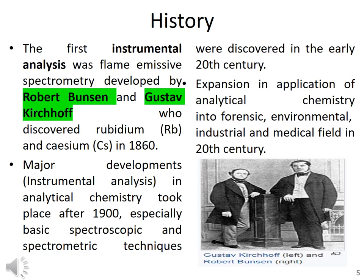Regarding the brief history of analytical chemistry, the first instrumental analysis was flame emission spectrometry, developed by Robert Bunsen and Kirchhoff. These scientists discovered rubidium and cesium in the 1860s. Major developments in instrumental analysis took place after 1900.